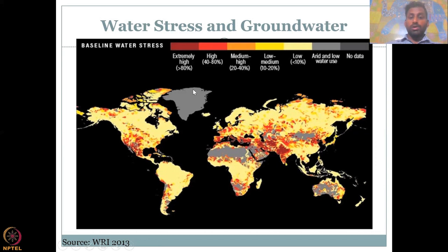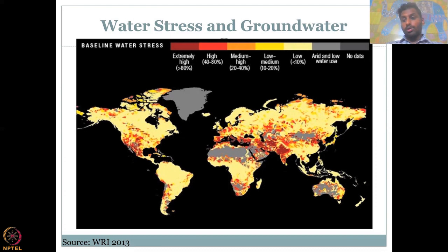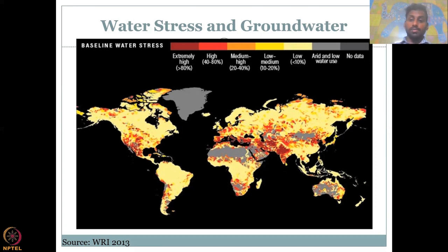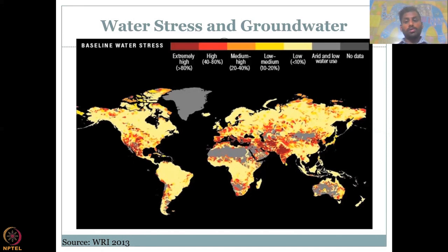Extremely high water stress is mapped along the Indian subcontinent where groundwater and water resources are heavily used to supply water for the large population and also for agricultural and industrial activities. If you map the groundwater uses we looked at in the previous lectures, you could clearly see that the water stress already mapped across the globe also limits your groundwater use.